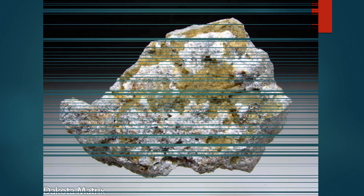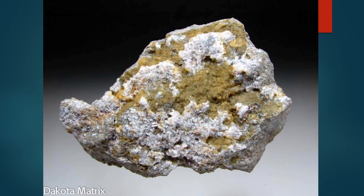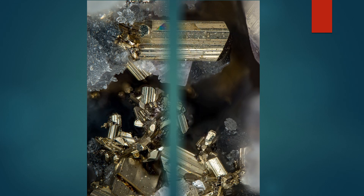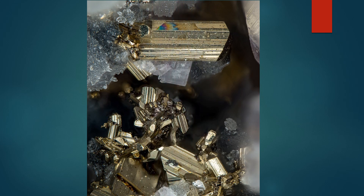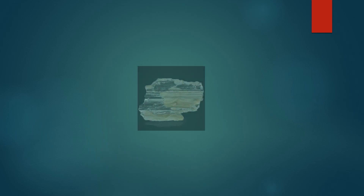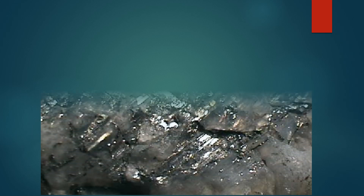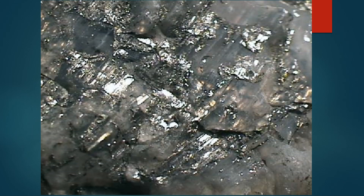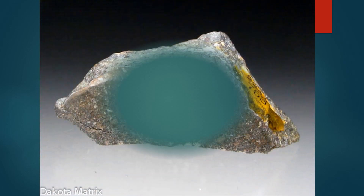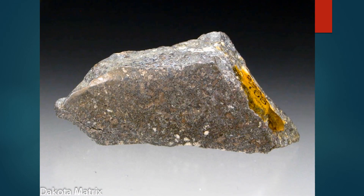Extraction and processing: since calaverite is a telluride ore, the gold in it is difficult to extract using standard gold mining methods. This ore often requires heat treatment — roasting — to break down the telluride structure, making it possible to extract pure gold afterward. Calaverite is mainly mined for its gold content, but due to its complex chemical nature, it is less commonly found than native gold ores. However, given the value of gold, calaverite still plays an important role in gold mining in regions where this ore type is present.